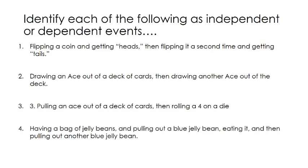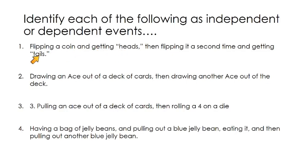Pause the video and go through these first and see if you think that these events are independent or dependent. If we're flipping a coin and getting heads and then flipping it a second time and getting tails, the first event would be the first coin flip and the second event would be the second coin flip. Just because you got heads the first time, you still have a 50-50 for your second coin flip. The first event does not affect the second event. So these events are independent.